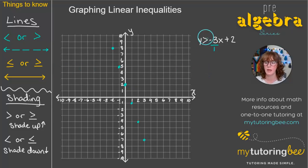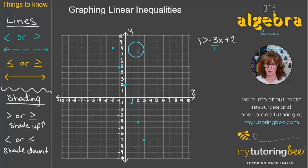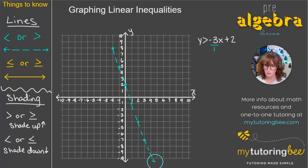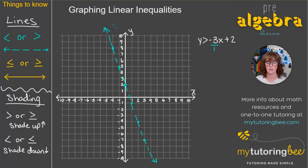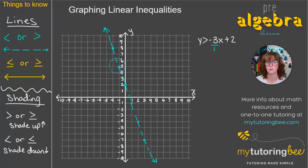Because we have a greater than symbol and not the line underneath for 'equal to,' we are going to use a dashed line. I'll draw a straight dashed line going all the way off the graph with arrowheads on each end to show the line continues in each direction. This dashed line means any points along it are not actually solutions to this inequality.